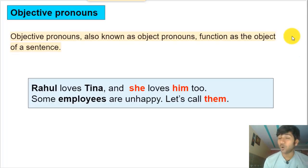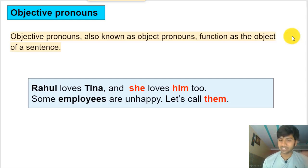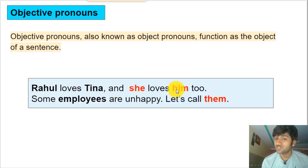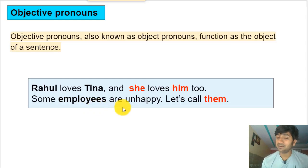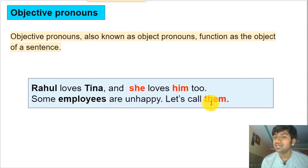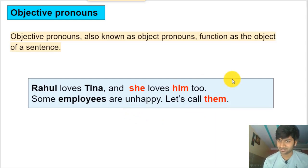These pronouns work as the subject of a sentence. Moving to objective pronouns — these pronouns work as the object of a verb or the object of a preposition. That means they come either after a verb or after a preposition. Example: 'Rahul loves Tina and she loves him too.' 'She' is a subjective pronoun referring to Tina; 'him' is the objective pronoun referring to Rahul. 'Some employees are unhappy — let's call them.' 'Them' is the objective pronoun for the employees.